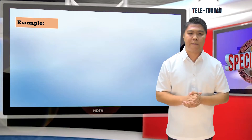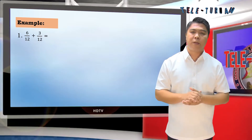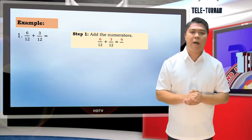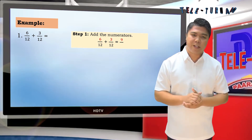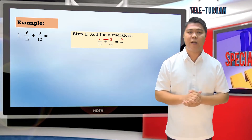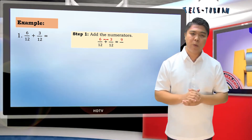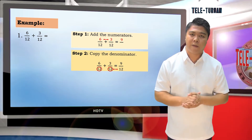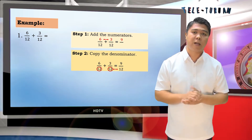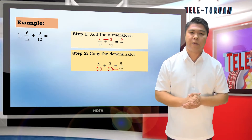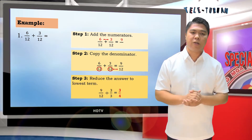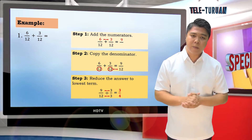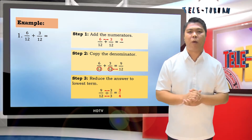Let's have another example: 6 twelfths plus 3 twelfths. Step 1: add the numerators — 6 plus 3 is 9. Step 2: copy the denominator — their denominator is 12 — that gives us 9 over 12. Step 3: reduce the answer to lowest term — 9 divided by 3 is 3.